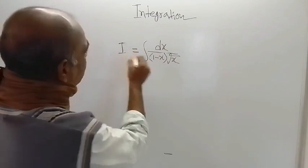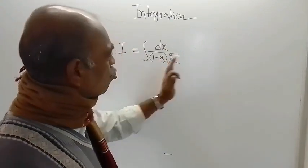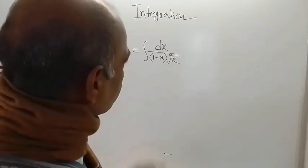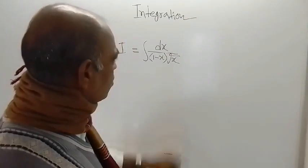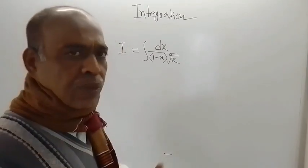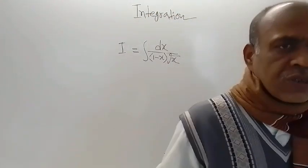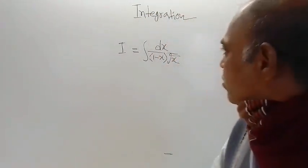So integration I is equal to integration of dx divided by 1 minus x root of x. Though the problem looks complicated, the solution is so easy. You just have to choose the proper substitution. If you can choose the proper substitution, then the solution becomes so easy.